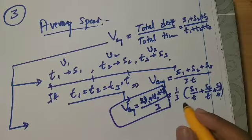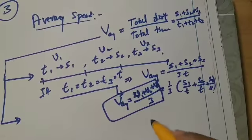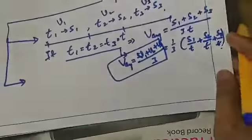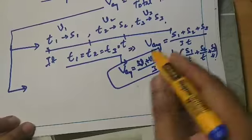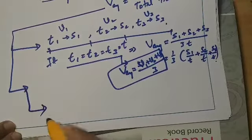Clear? I hope you are clear with this. Average velocity, V1 plus V2 plus V3 by 3, the arithmetic mean of the given velocities when you have equal time intervals given.